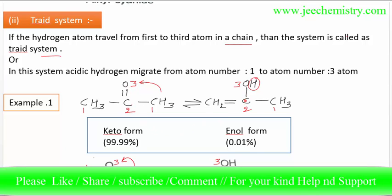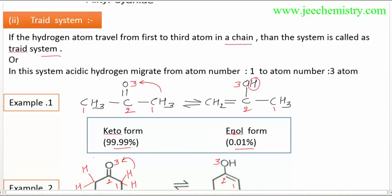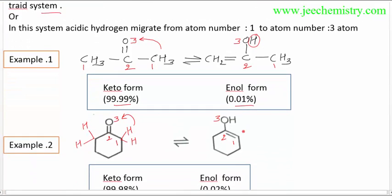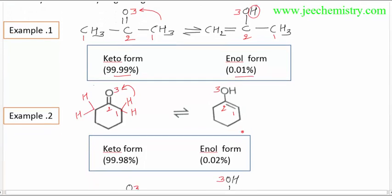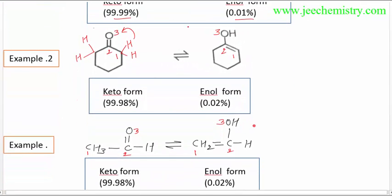This is the keto form, and this is the enol form. The keto form is 99.99% and the enol form is 0.01%. In another example, the keto form is 99.98% and the enol form is 0.02%. In this example, hydrogen migrates from atom number one to atom number three, so this is called the triad system. Three atoms are involved in the migration of hydrogen, and they are called the triad system.